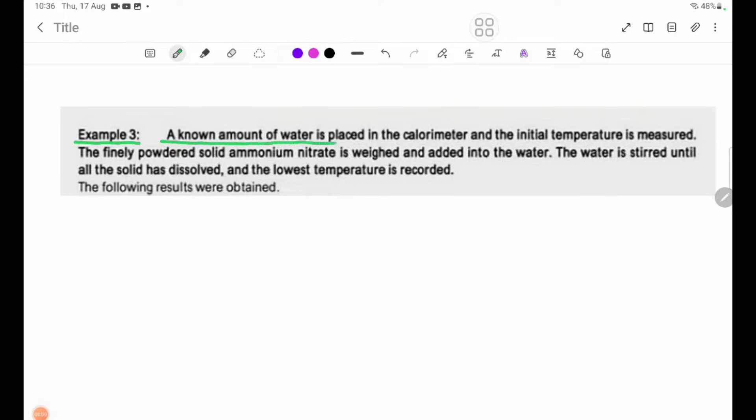A known amount of water is placed in the calorimeter and the initial temperature is measured. The finely powdered solid ammonium nitrate is weighed and added into the water.